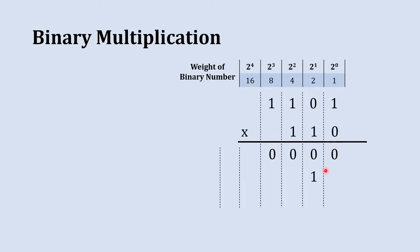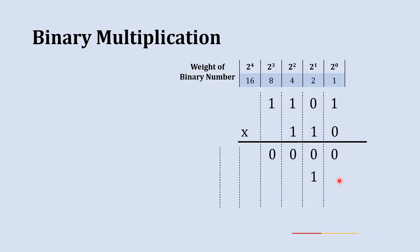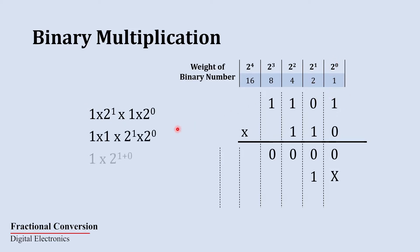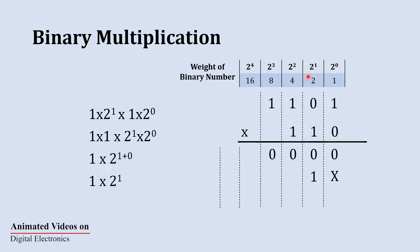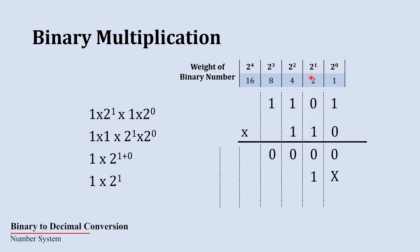The reason we put the result in the 2's place and not the 1's place lies in this logic: when we multiply this 1, which has a weight of 2^1, with this 1, which has a weight of 2^0, the multiplication result is 1 and the product of their weights is 2^1, which is also known as the 2's place. That is why the result is 1 and its place value is 2^1 or 2's place.